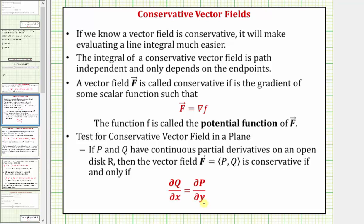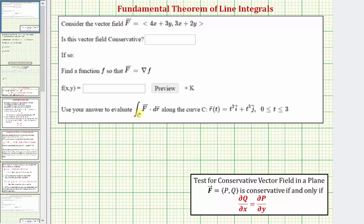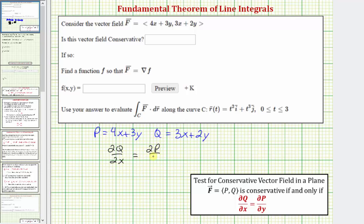So if the given vector field is conservative, then we'll be able to evaluate the line integral along the curve C of F dot differential r using the fundamental theorem of line integrals. Let's first determine if the vector field F is conservative. Using our notes below, notice how P is equal to four x plus three y and Q is equal to three x plus two y. So if the given vector field is conservative, then the partial of Q with respect to x must equal the partial of P with respect to y.